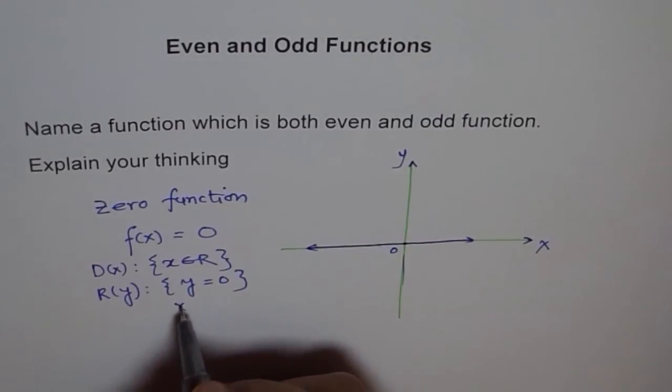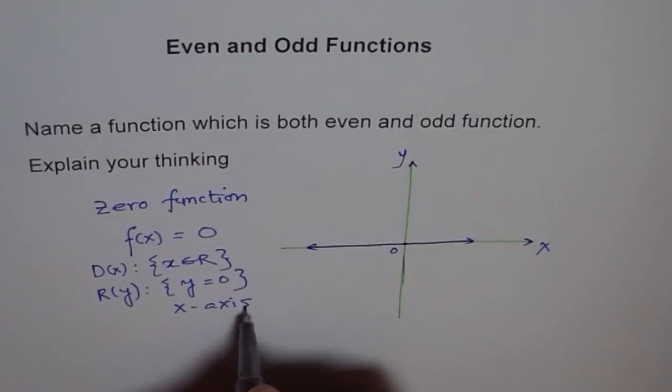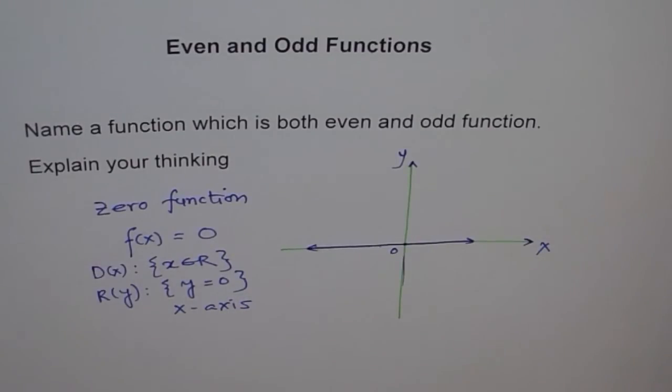Or you can say x-axis. So, x-axis, which actually is our zero function, f(x) equals to 0, is both even and odd. It's good to know. It helps. Thank you.